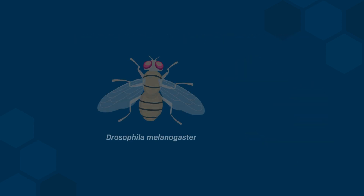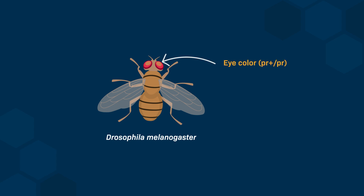Let's consider two traits of Drosophila melanogaster. One is the color of the eyes, denoted as PR for purple eyes and PR-plus for red eyes, and the other is the shape of the wings, denoted as VG-plus for normal wings and VG for vestigial wings.